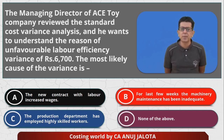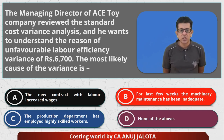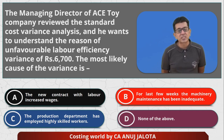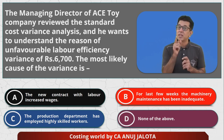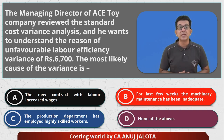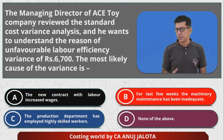Let's talk about option C. If the production department employs highly skilled workers, those workers usually work faster and complete the job faster, which means efficiency variance should be favorable. But in this question the variance is adverse, so option C cannot be the answer either.